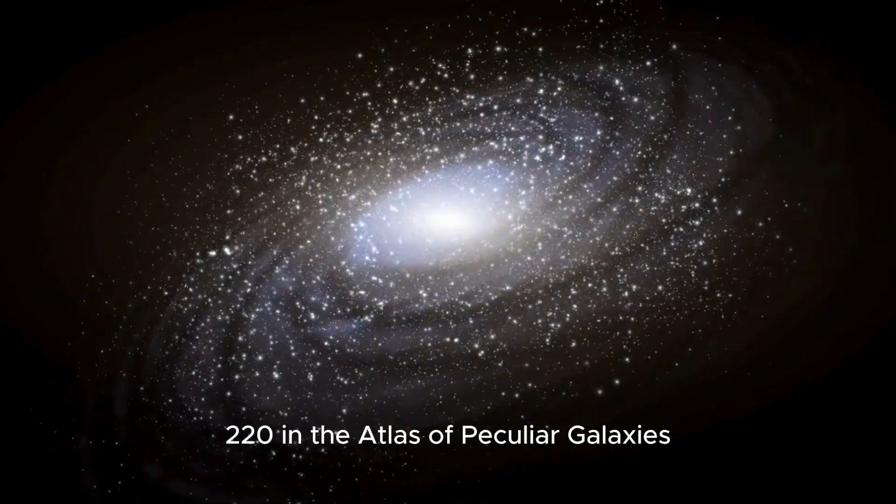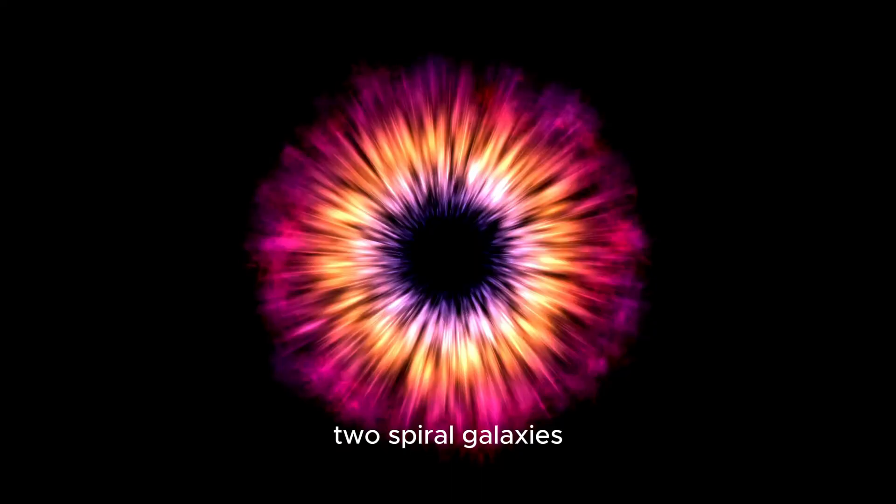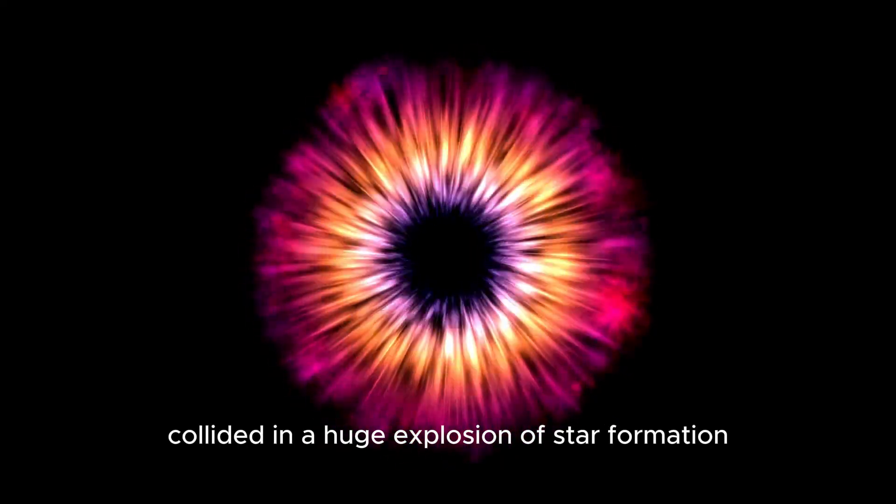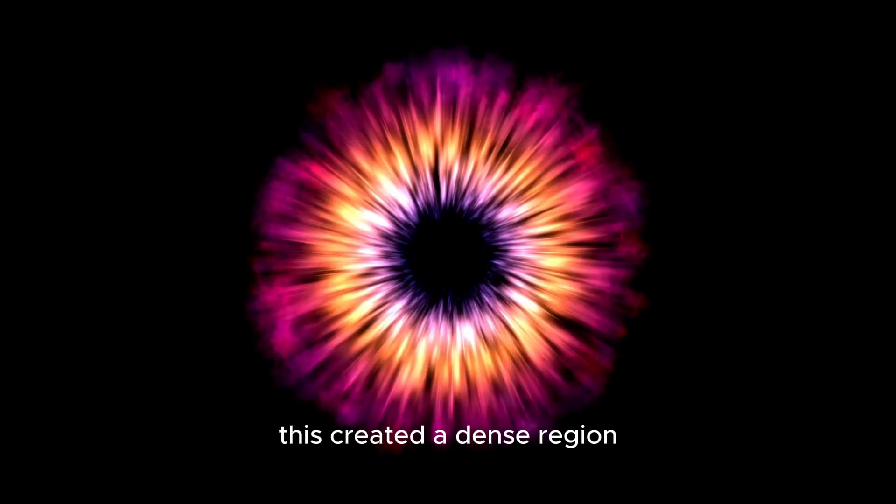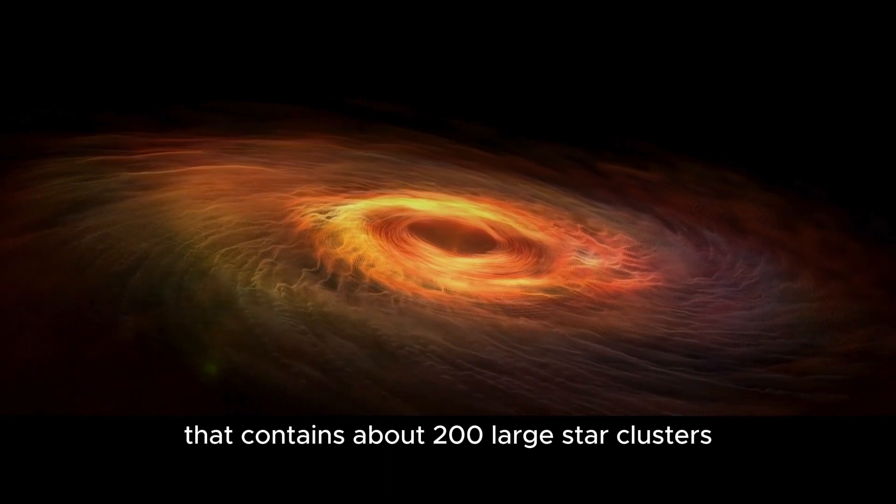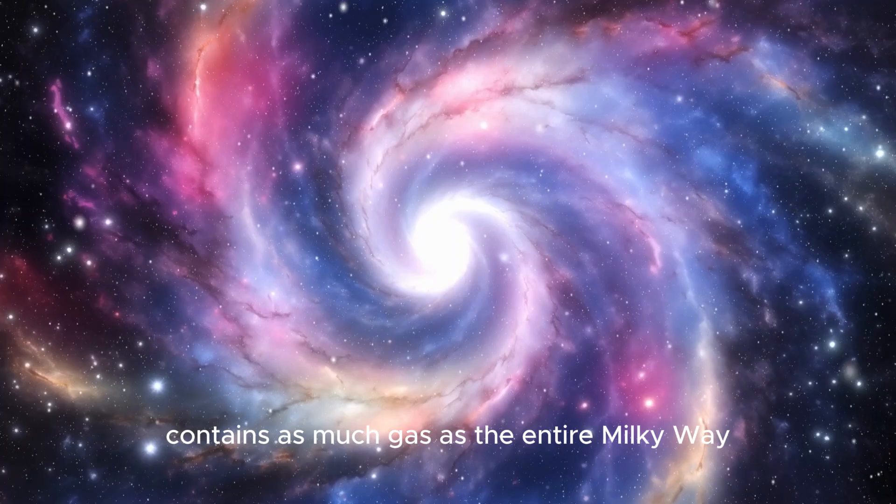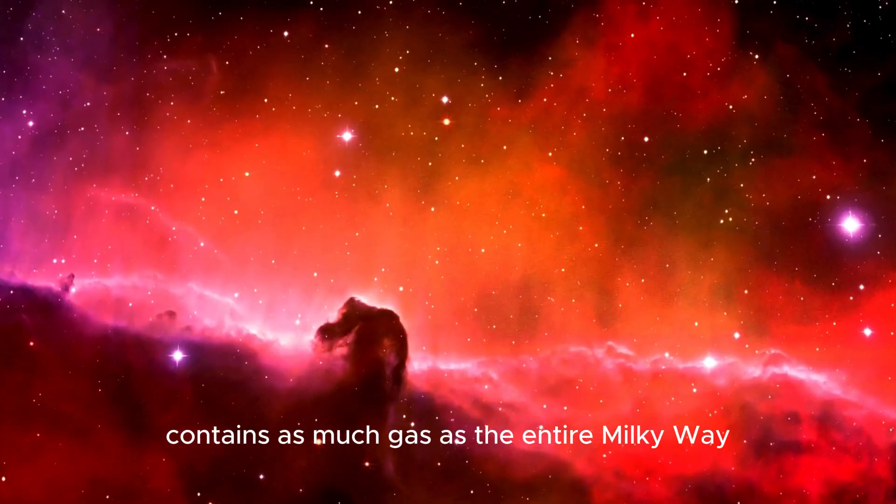About 700 million years ago, two spiral galaxies collided in a huge explosion of star formation. This created a dense region about 5,000 light years across that contains about 200 large star clusters. Surprisingly, this small area contains as much gas as the entire Milky Way.